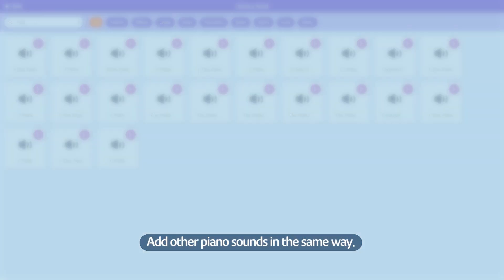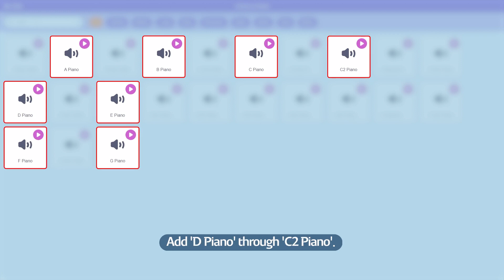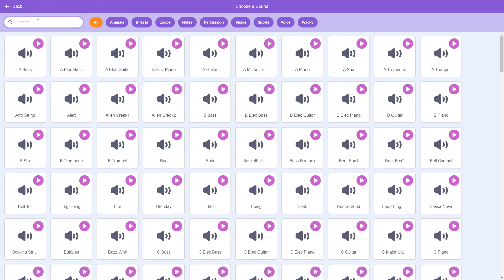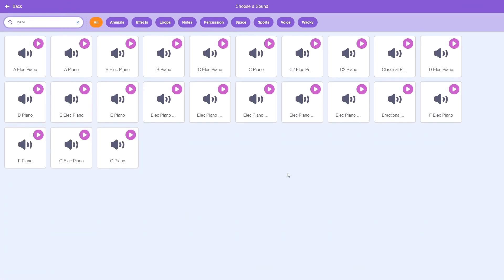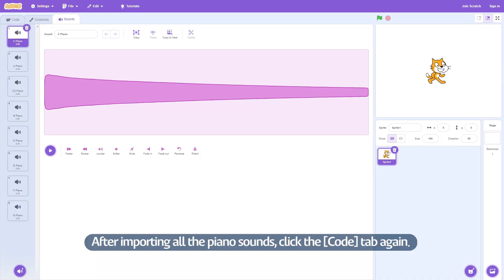Add other piano sounds in the same way. Add D Piano through C2 Piano. After importing all the piano sounds, click the Code tab again.